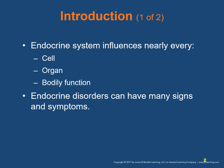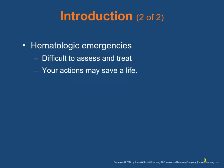The human endocrine system, directly or indirectly, influences nearly every cell, organ, and bodily function, and endocrine disorders are often seen with a multitude of signs and symptoms. Hematologic emergencies are difficult to assess and treat in a pre-hospital setting, but your actions may save a patient's life.